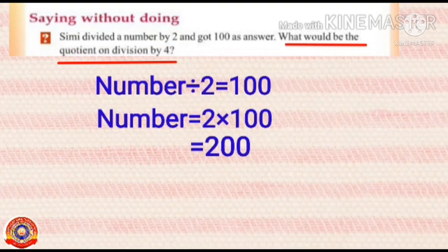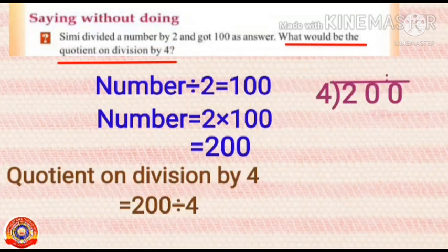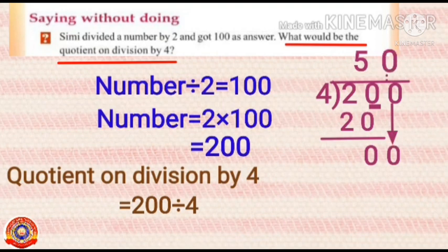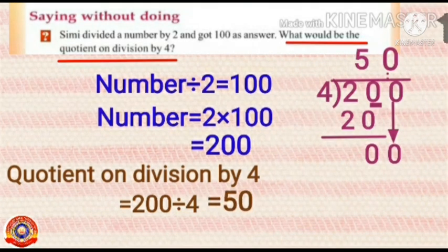The question is, what would be the quotient on division by 4? To find out this, let's divide 200 by 4. Take the first digit, 2 is less than 4. So, take the next digit also. We will get the number 20. Then, let's find how many times 4 is multiplied to get 20. Yes, 5 times. Then, let's do 20 minus 20, 0. Bring down this 0 here. How many times is it possible? Yes, 0 times. We get the quotient as 50. That is, 200 divided by 4 equals 50.